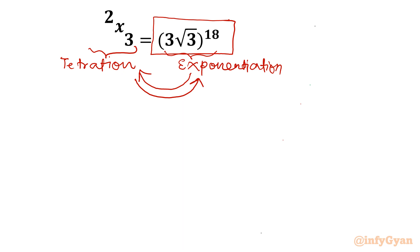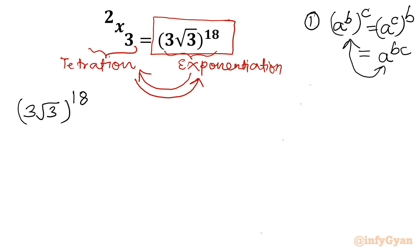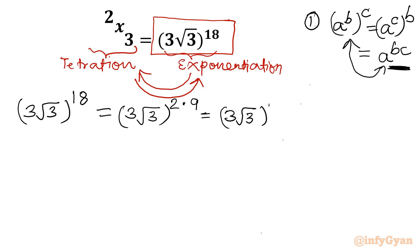I am going to consider only the RHS and convert it into tetration form — right now it is in exponential form. I will use the exponent property: a^(b·c) = (a^b)^c. I will write 3√3 and rewrite 18 as 2 times 9. Since we have a^(b·c), I can split this into (3√3)² whole power 9.